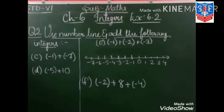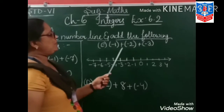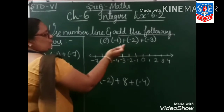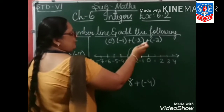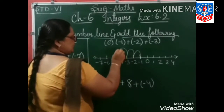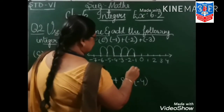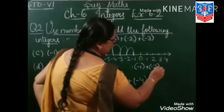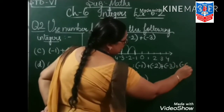Sum number C and D is your homework. Now how to do sum number E? Minus 1 plus minus 2 plus minus 3. So from minus 1, first you will move 2 steps to the left: 1, 2. Again from here, you will move 3 steps left: 1, 2, 3. So what is our answer? Our answer is minus 6.